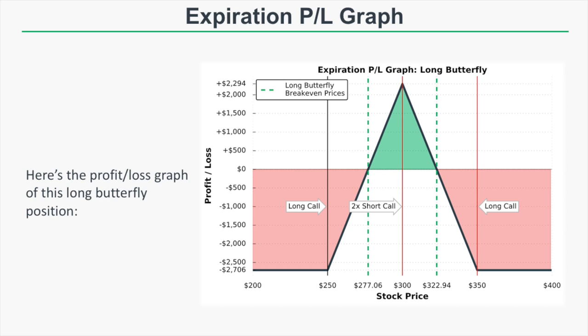The lower break-even of $277.06 comes from the long call strike of $250 plus the debit of $27.06. At that price, the two short 300 calls and the long 350 call all expire worthless, but the long 250 call is worth $27.06 — exactly what we paid for the entire butterfly. On the upside, our break-even price is $322.94.